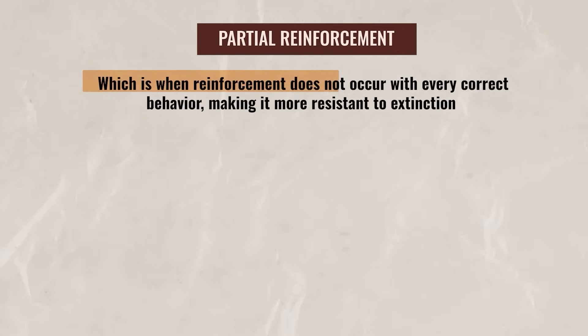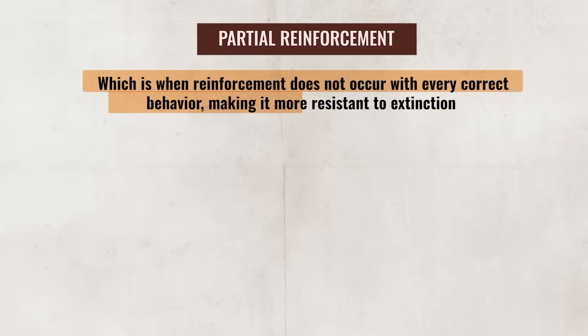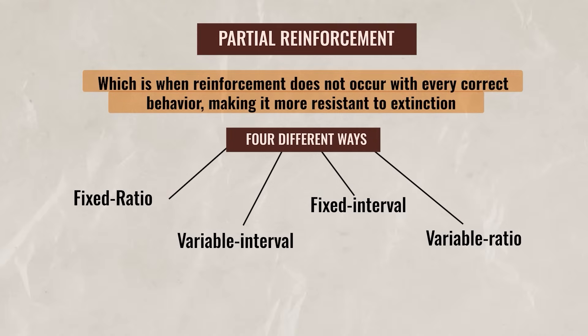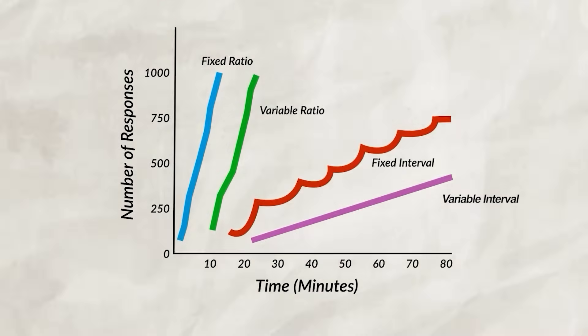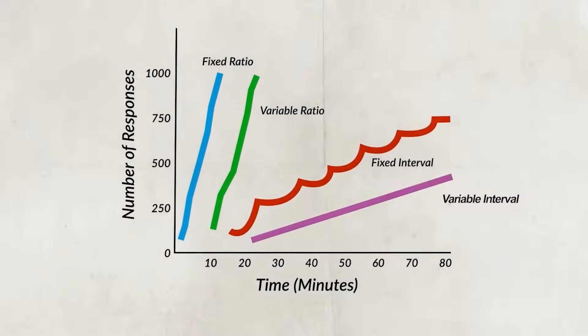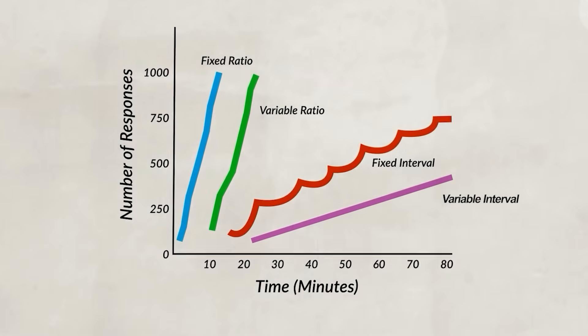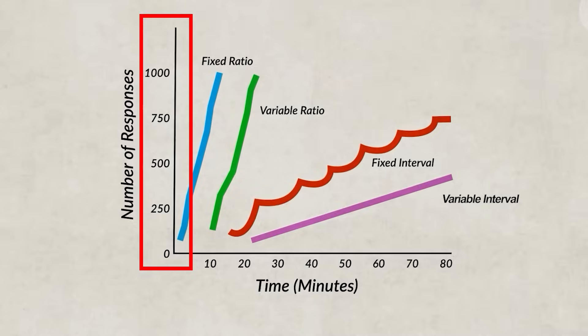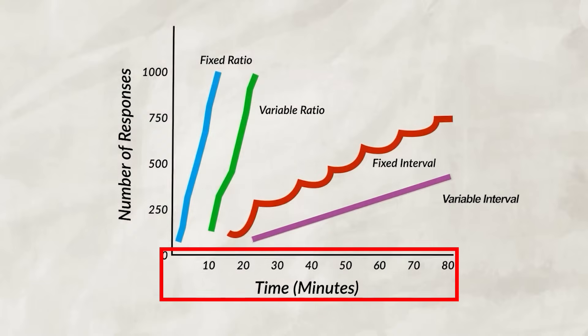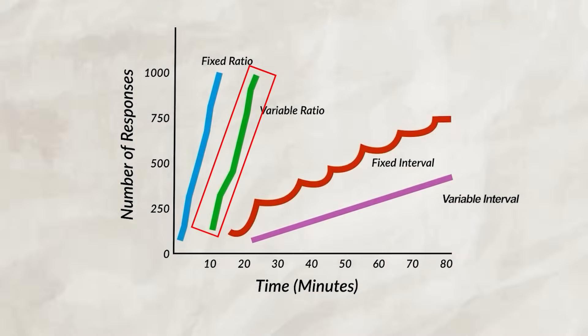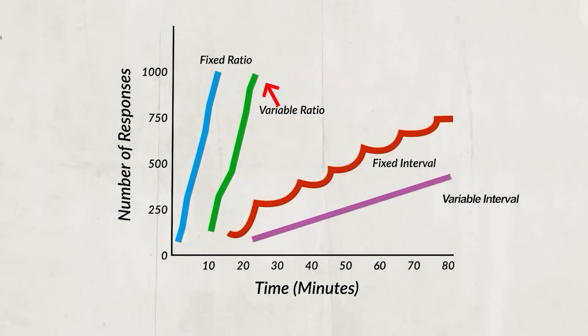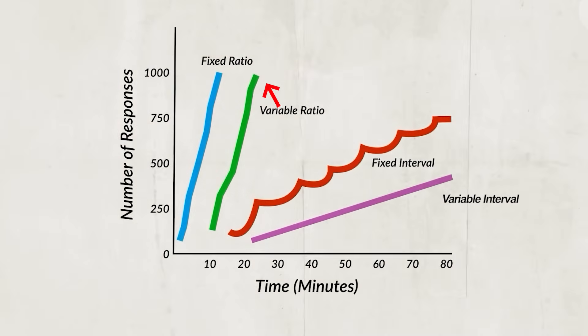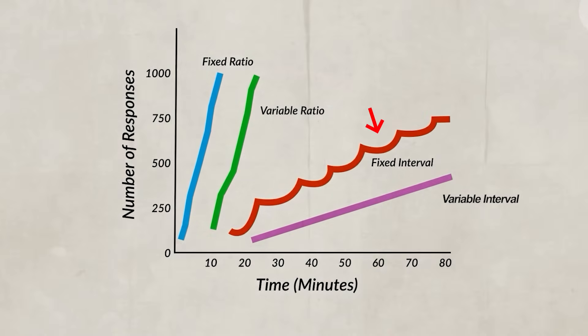The other reinforcement schedule is partial reinforcement, which is when reinforcement does not occur with every correct behavior, making it more resistant to extinction. Partial reinforcement can happen in four different ways. Before we talk about each schedule, let's go over the chart. This chart shows how quickly someone responds over time based on how rewards are given. Each line shows a different reinforcement schedule. The y-axis tells us how many actions are completed over a period of time, while the x-axis shows how much time has passed. Remember: the steeper the slope, the faster the response rate. If a line is straight, it indicates constant responding, whereas scalloped lines show pauses and bursts in the responses.